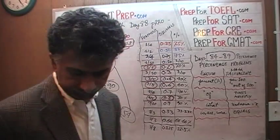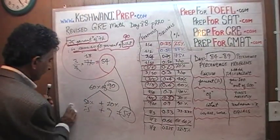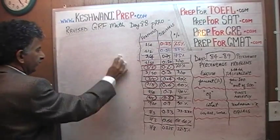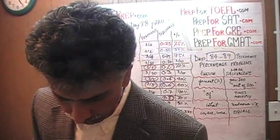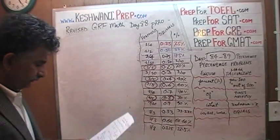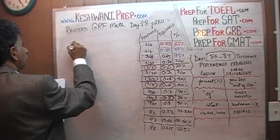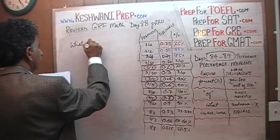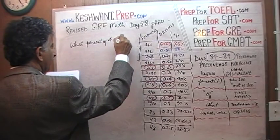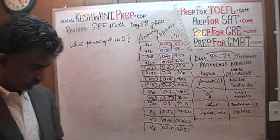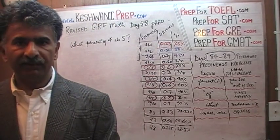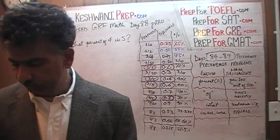Let's do one more — a slightly tricky one. I'm going to put it on the blackboard. I want you to work on it: pause the video, work on it, and once you have the answer resume. Here is the question: What percent of 4 is 5? Pause the video, do it, and when you have the answer resume.